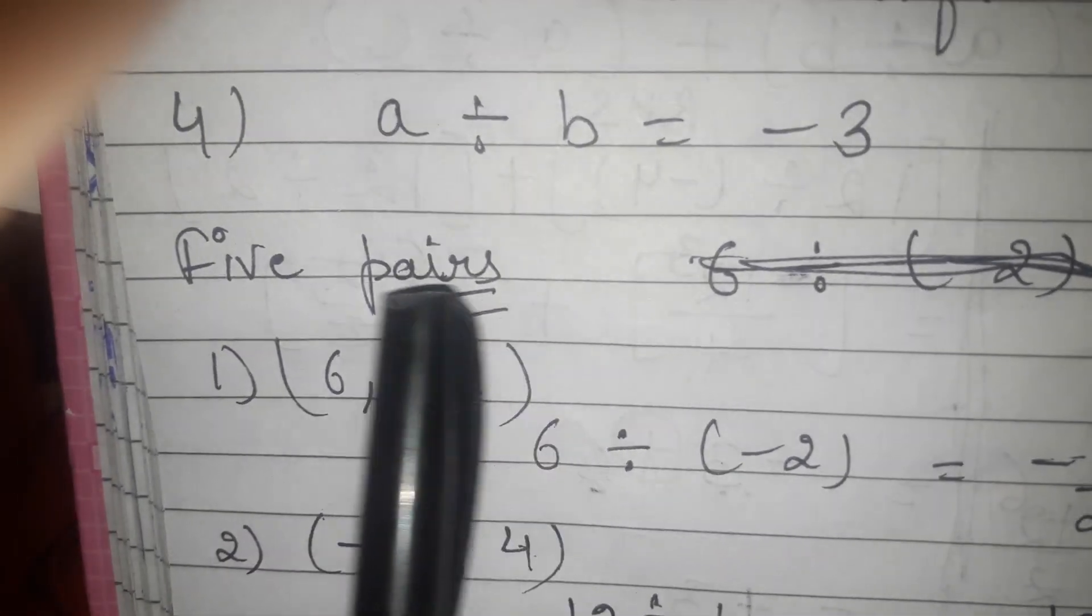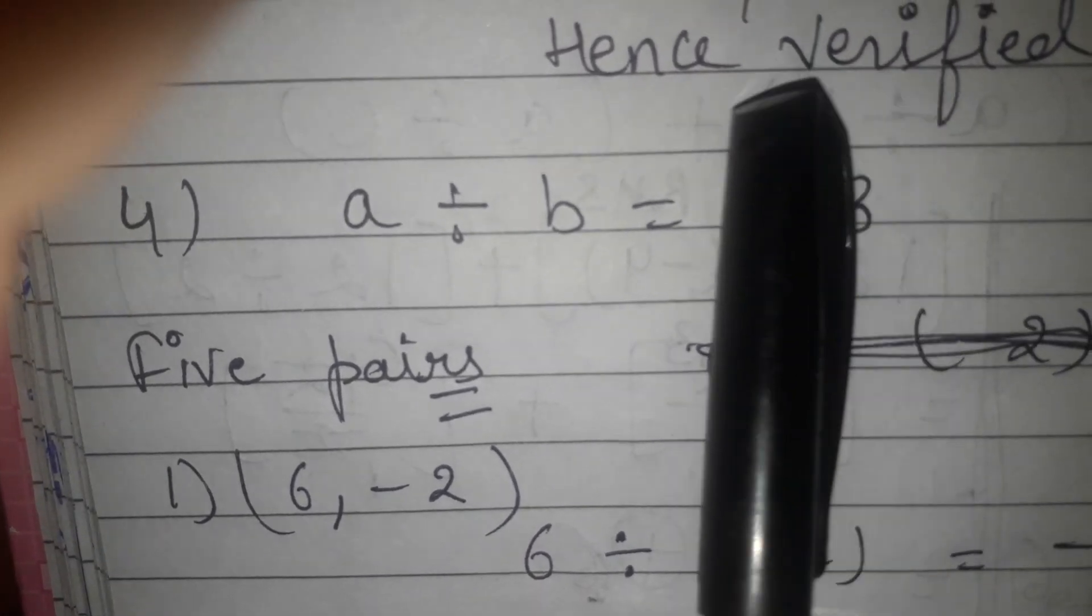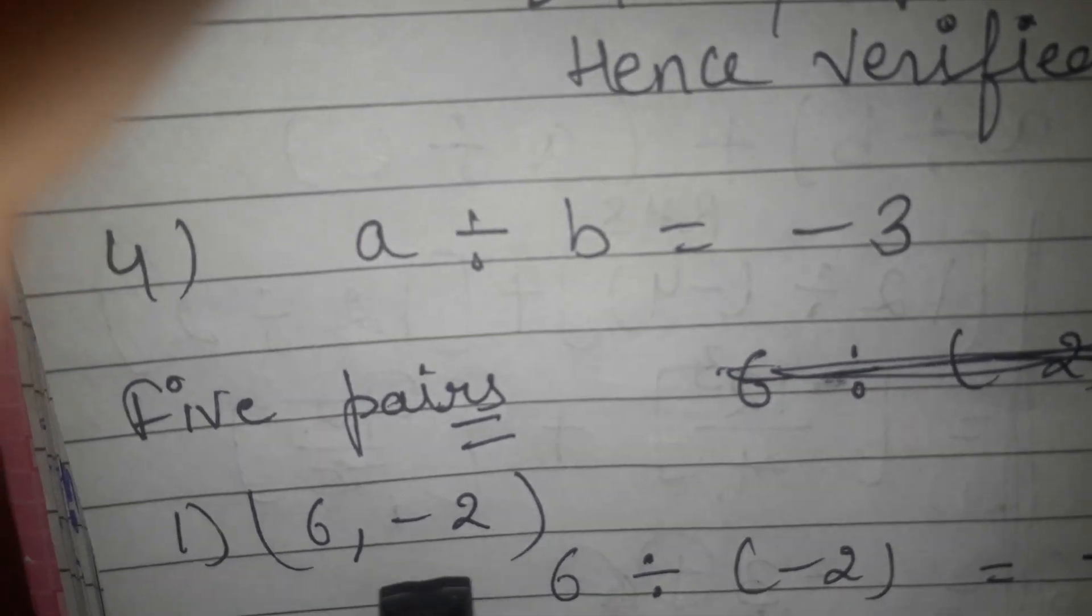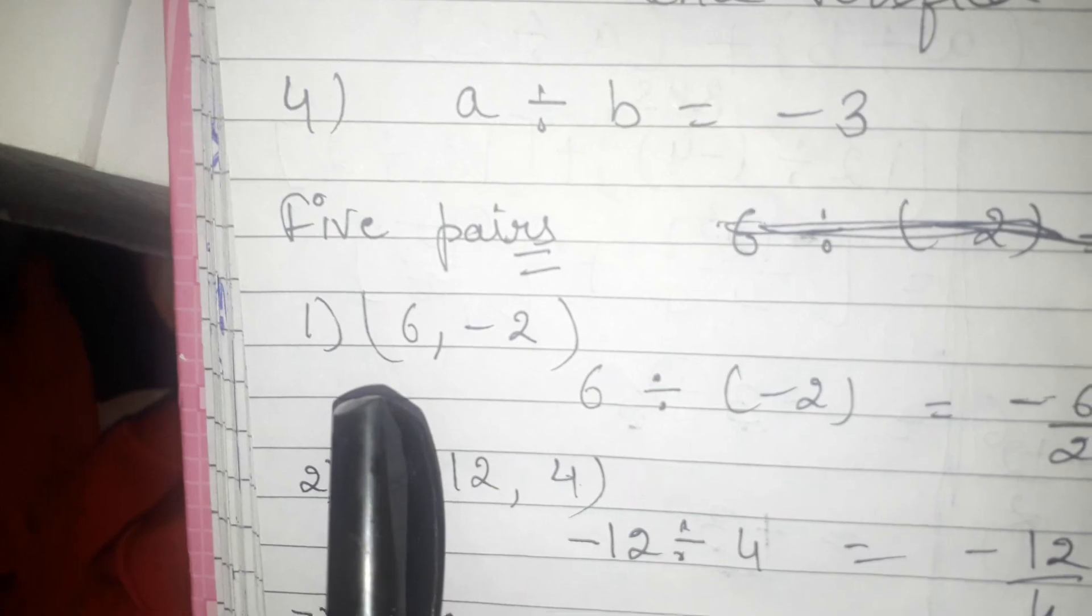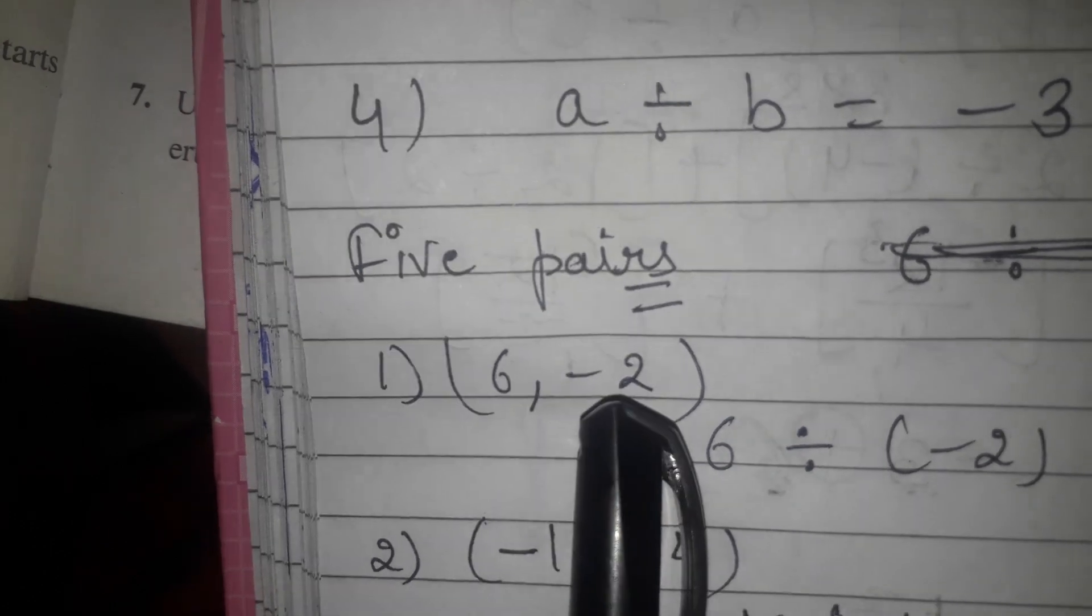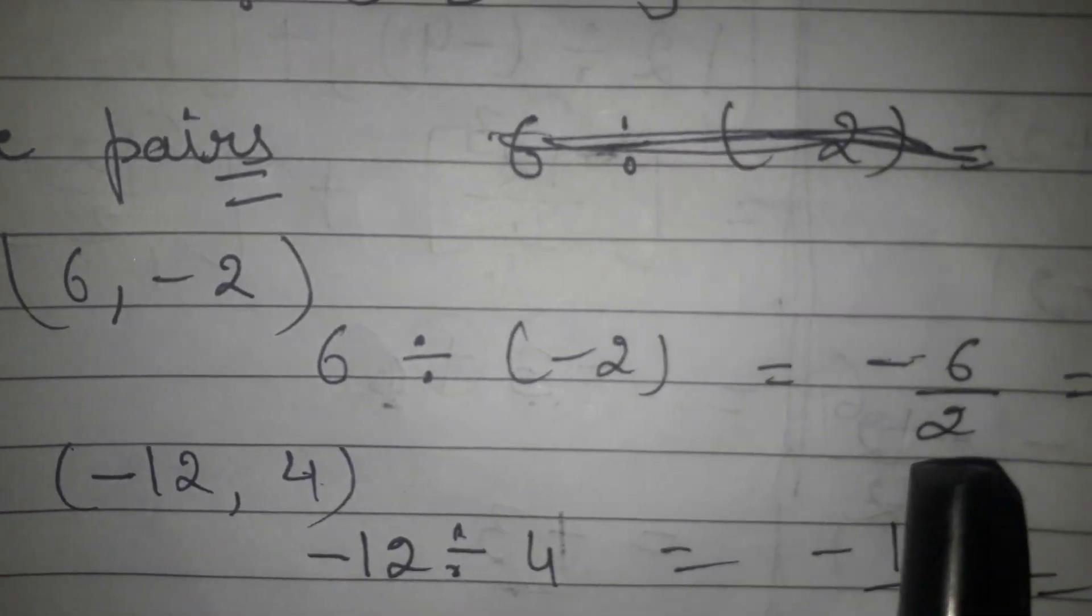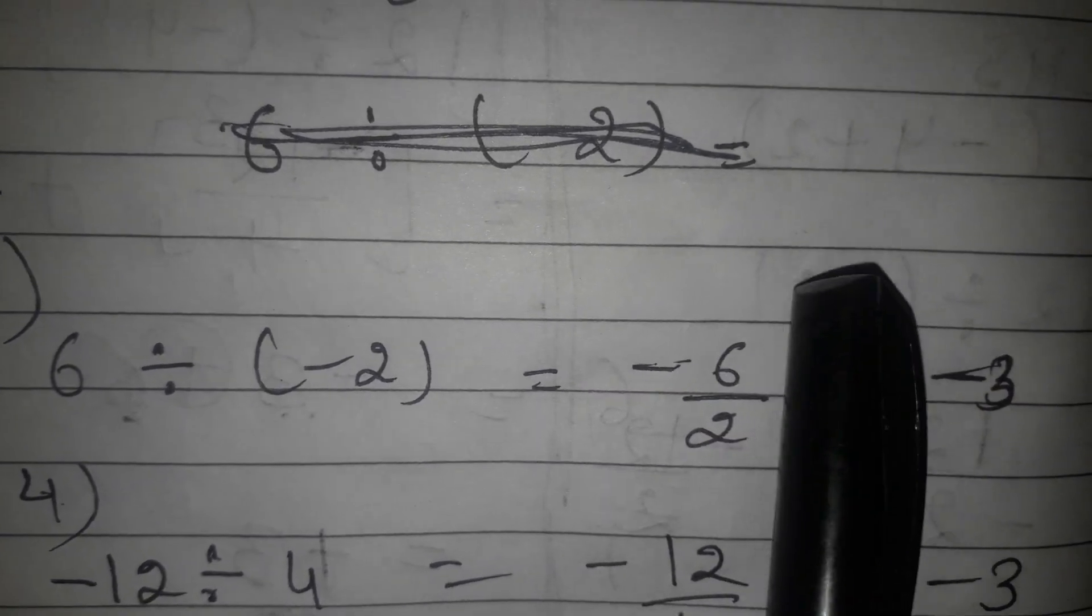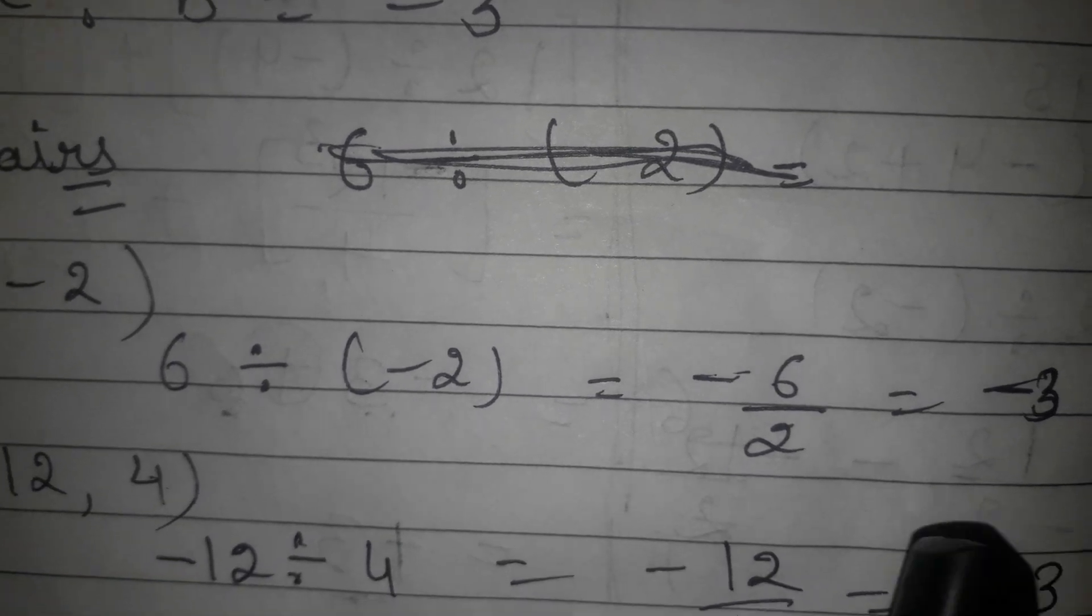You have to write 5 pairs whose answer is minus 3. You have to write 5 pairs of integers whose answer is minus 3. For example, first pair I am writing 6 and minus 2. When I divide 6 by minus 2, 6 by 2: minus 2 ones are 2, 2 threes are 6. Answer will be minus 3. You have to make 5 pairs like this.